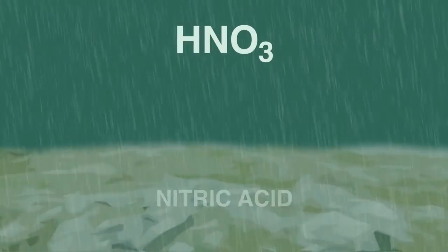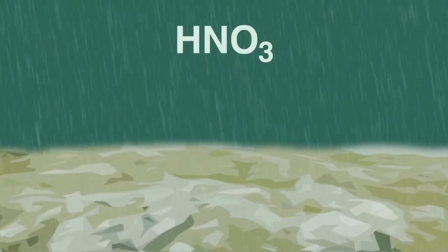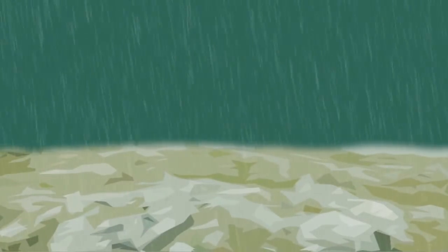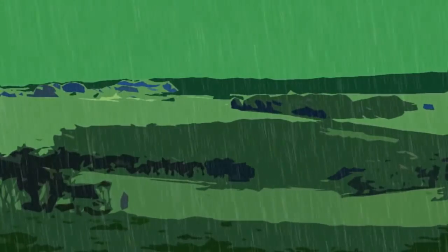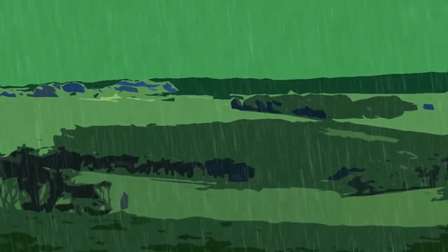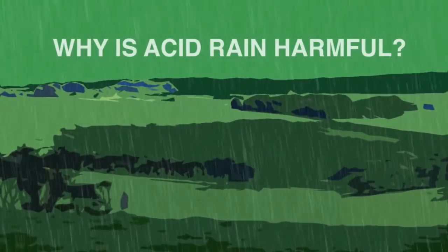If the rain falls on limestone soils which are alkaline, the acidity may be neutralized. However, if the rain lands on neutral or acid soils, or on vegetation, then it can cause damage. So why is this acidity harmful to living things?